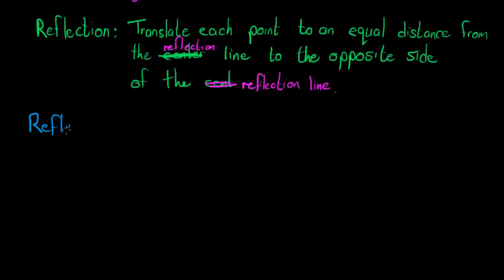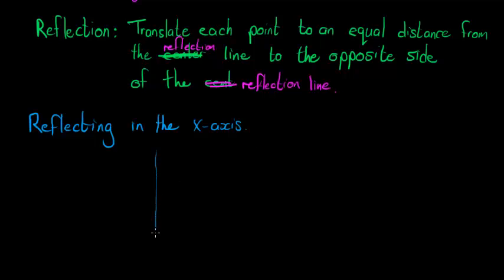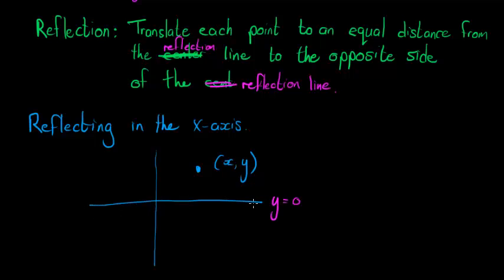Here we have our coordinate system and a point — some arbitrary point x, y. I'm going to reflect in the x-axis, which is actually the line y = 0. What is the distance that this point is from the reflection line? We measure this distance — in other words, it's the height above the x-axis — which we can read off as the y coordinate. So this distance is equal to y.